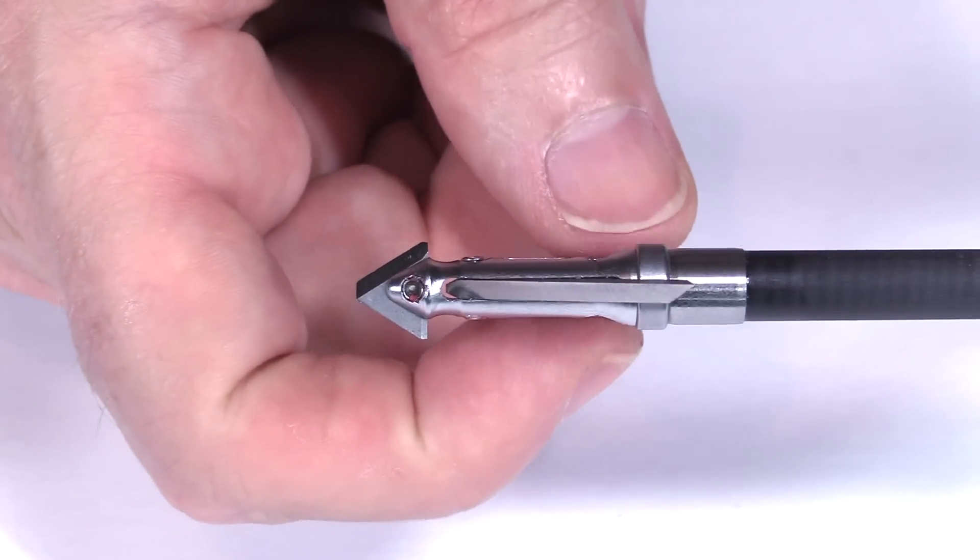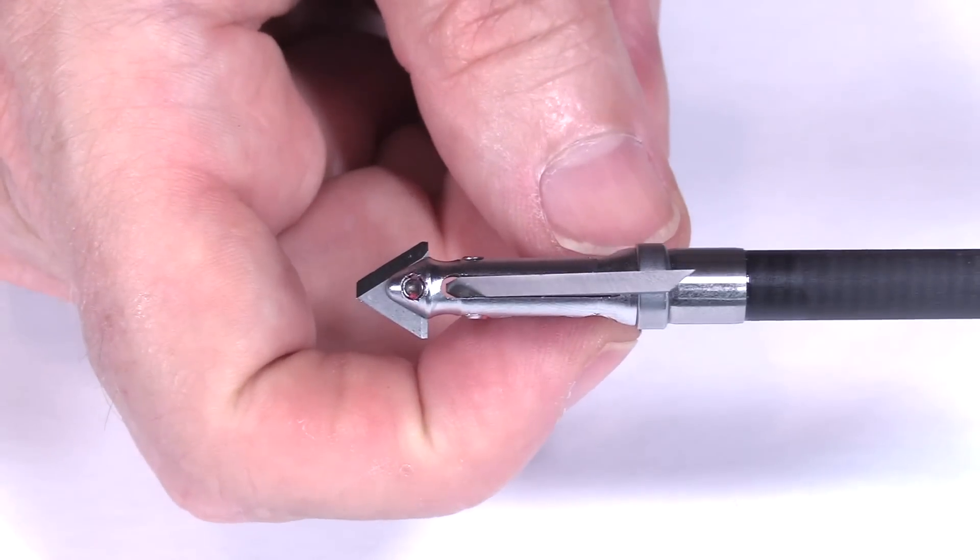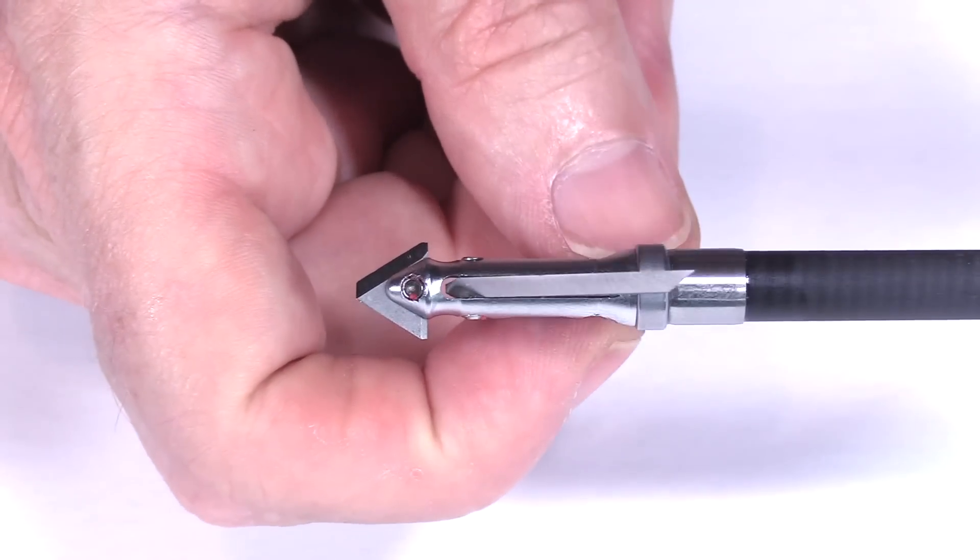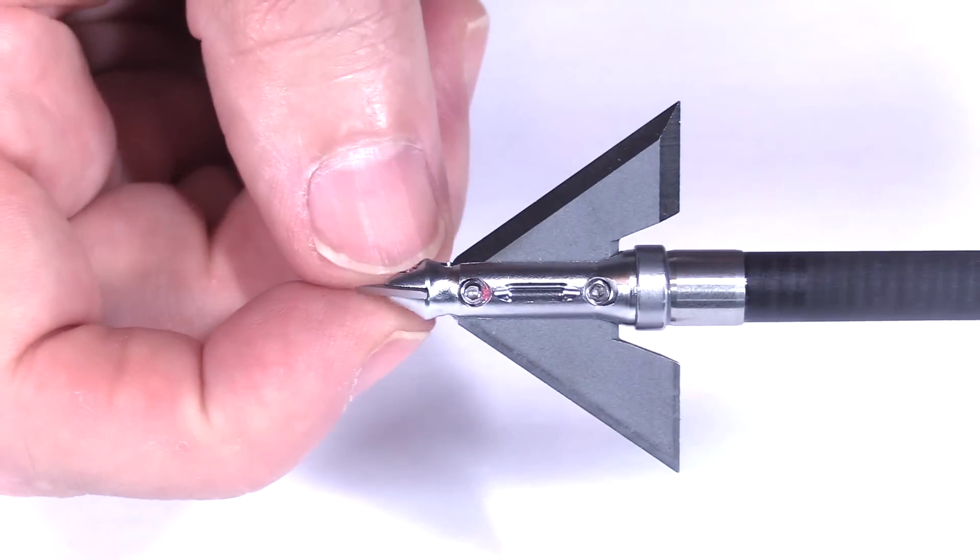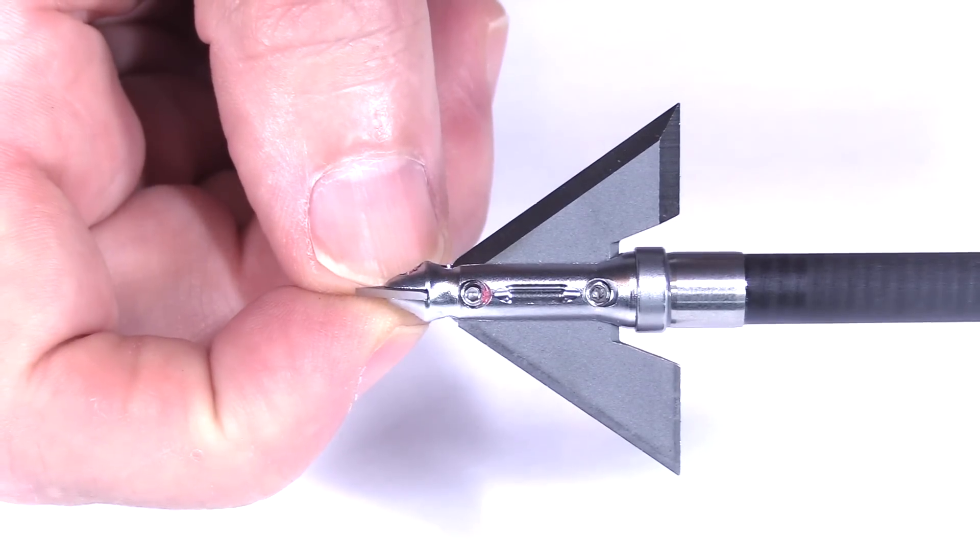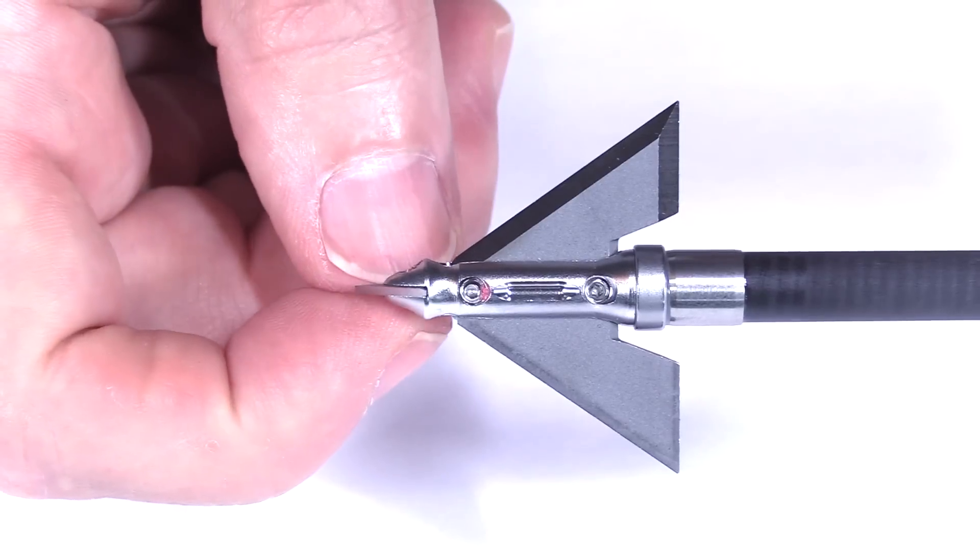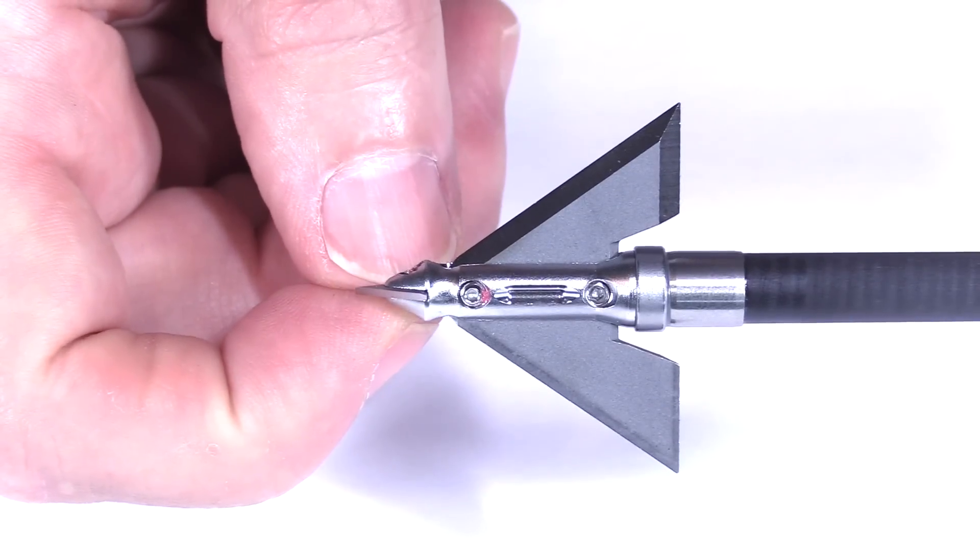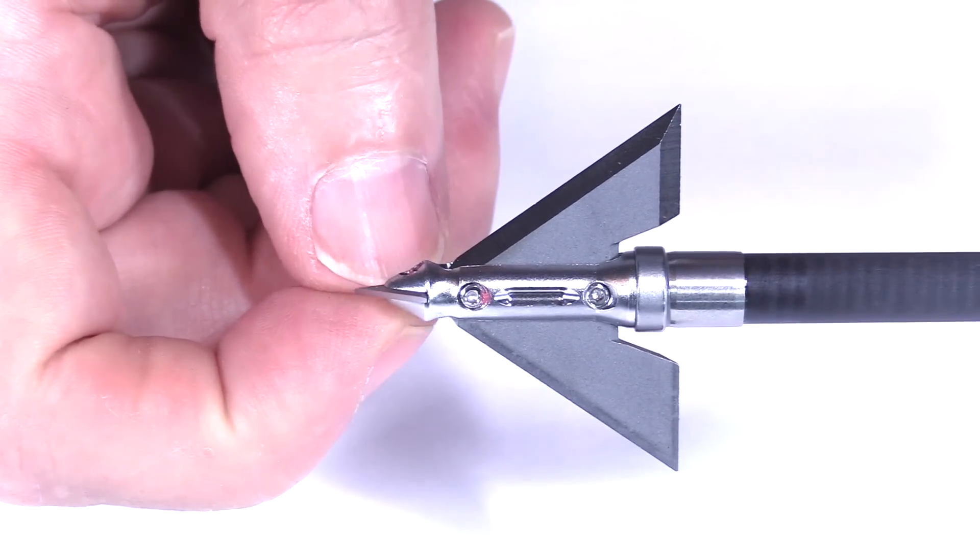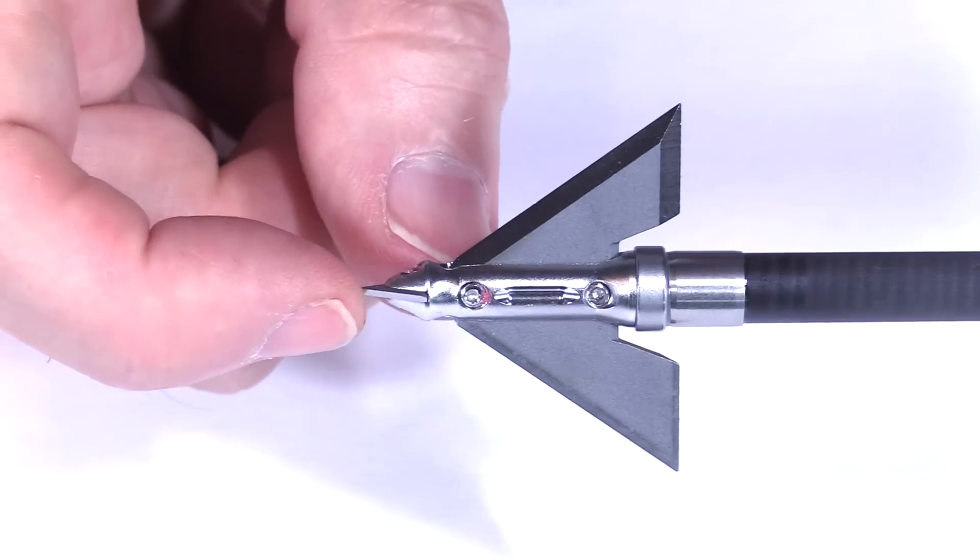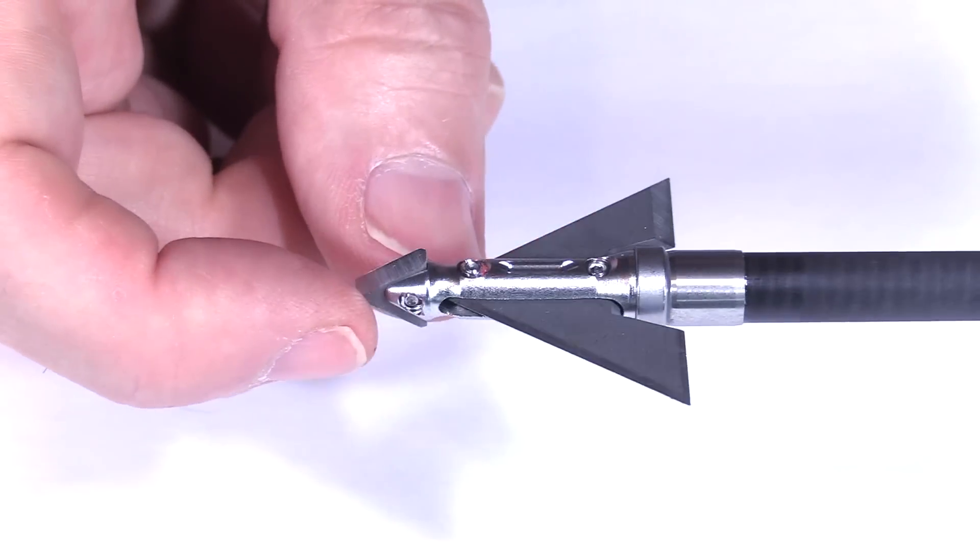The blades are really thick as well. The main blade is 0.078 inches thick, some of the thickest blades on the market. And even this tip is 0.040 inches thick. That's one of the thicker blades of a replaceable blade on the market. That's the same thickness as a QAD Exodus. So really nice thick tip there. With it being so short, it's going to help it to be a bit more durable.